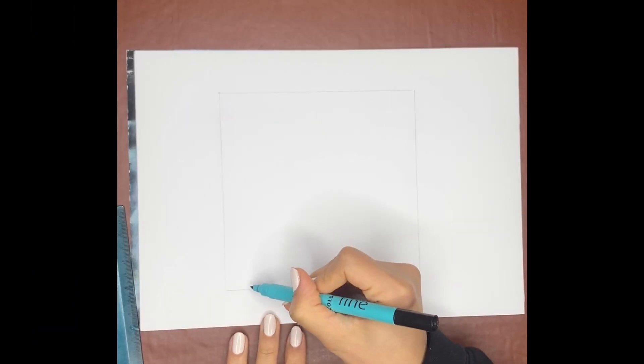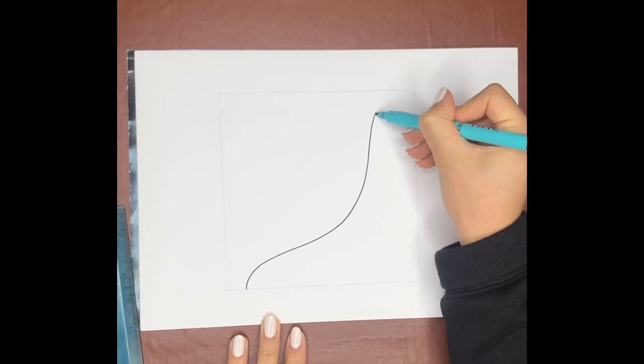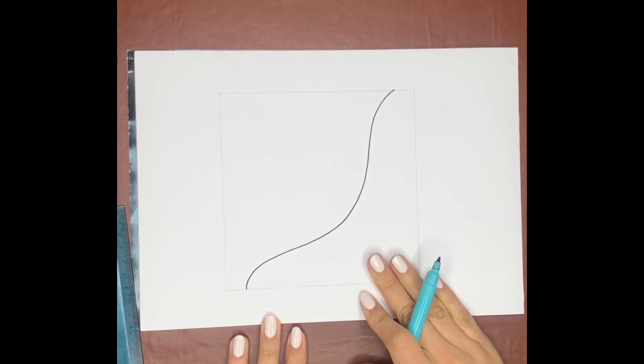Then you're going to get your pen. So you want to start off by drawing a nice curve from one edge to the other. And it doesn't matter which way around you do it, but this is where you're going to start off.